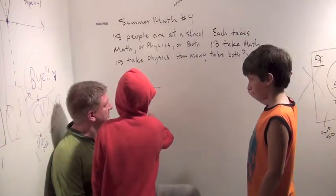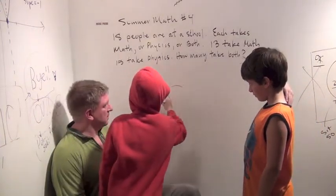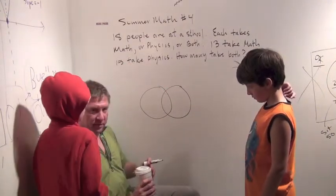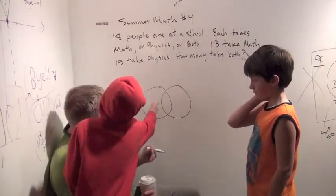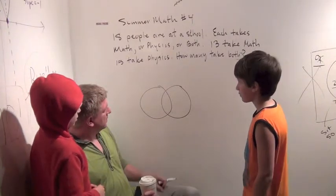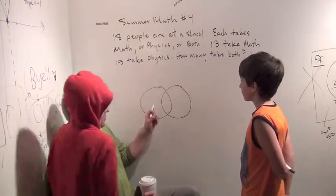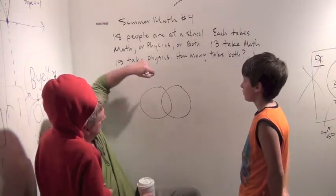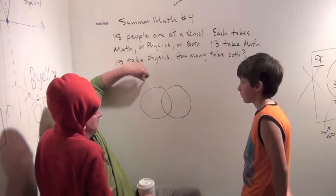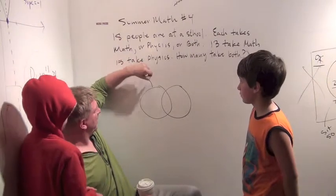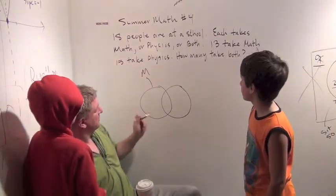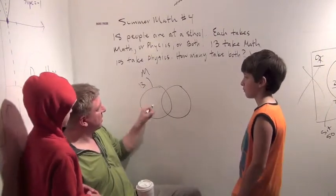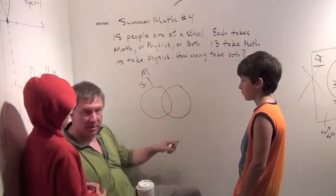So how would you like to start this problem? Well, you could draw a Venn Diagram like this. Maybe you talk, I'll draw. Well, you can't put 13 in the middle. What does this circle represent here? It represents the people who take math.